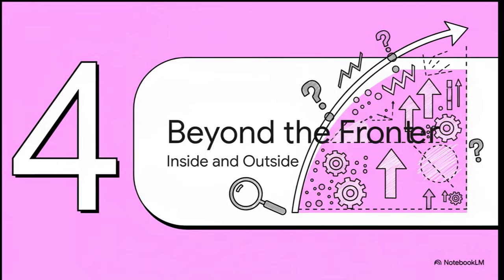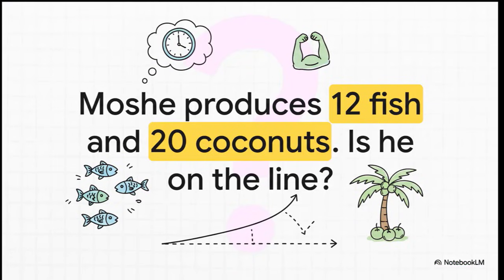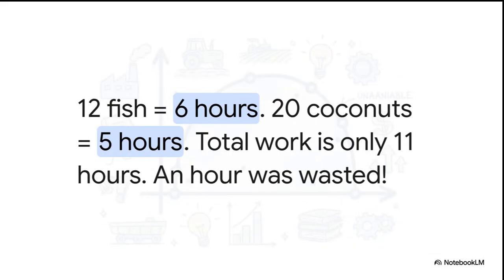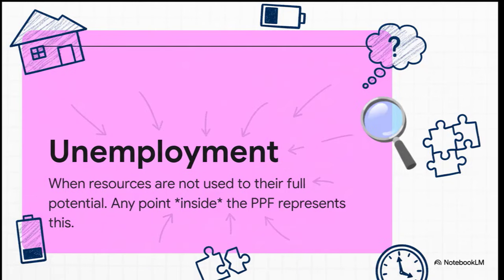What about all that other empty space on the graph? Let's try a thought experiment. Say Moshe ends his day with 12 fish and 20 coconuts. To get those 12 fish takes 6 hours, and to get 20 coconuts at 4 per hour takes 5 hours. That's only 11 hours — he had a 12-hour day, so he wasted a whole hour. That point is inside our frontier. In economics, when you have resources that could be working but aren't, we call that unemployment. Any point inside the production possibility frontier represents inefficiency — a state of unemployment.